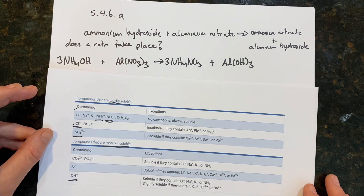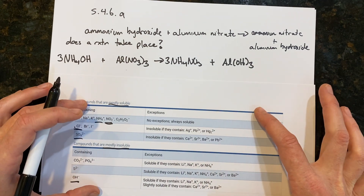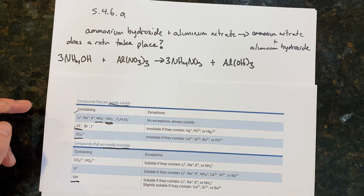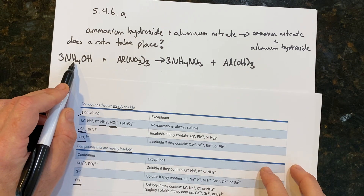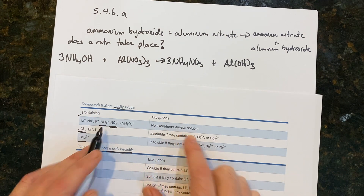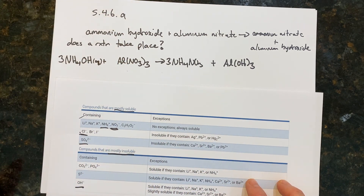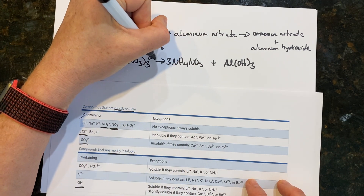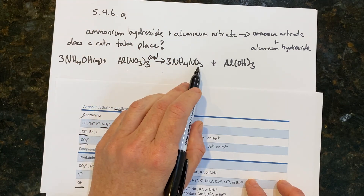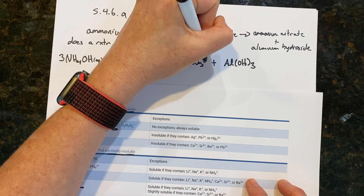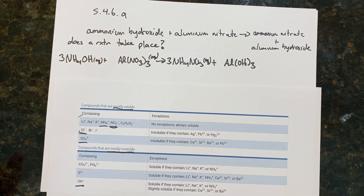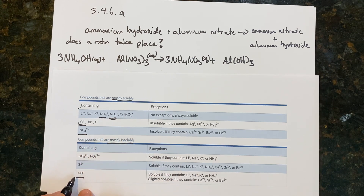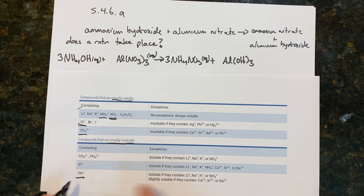Let's use the solubility chart. Ammonium is always soluble — no exceptions — so ammonium hydroxide is aqueous. Nitrate is also always soluble — no exceptions — so aluminum nitrate is aqueous. Ammonium nitrate: both ions are always soluble, so it's aqueous. Aluminum hydroxide: hydroxide is mostly insoluble; aluminum is not one of the soluble exceptions, therefore aluminum hydroxide is insoluble — a solid.